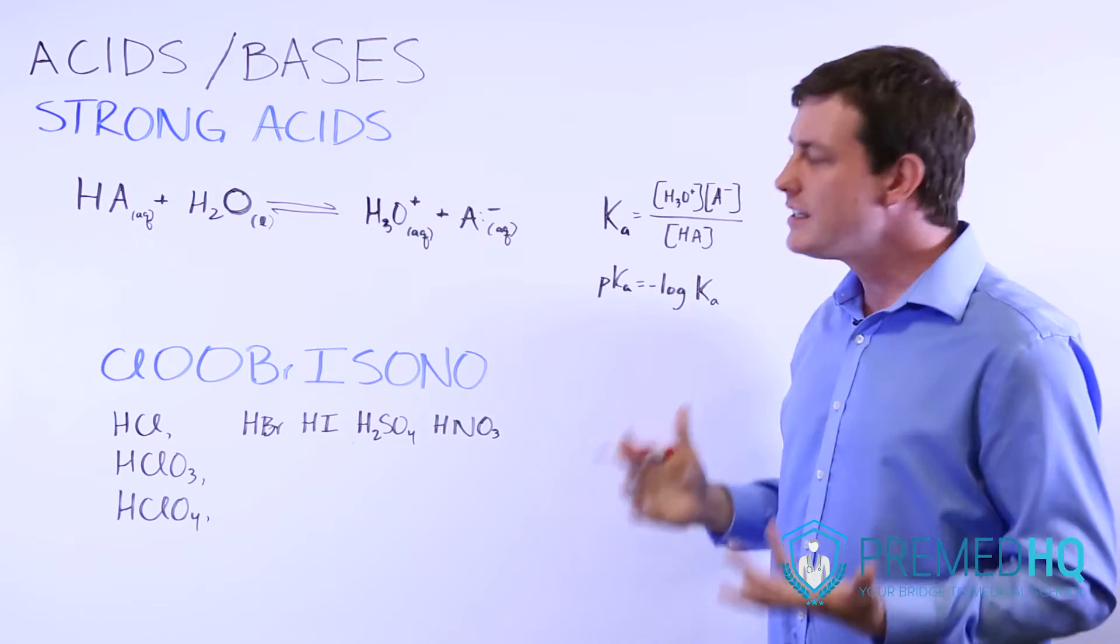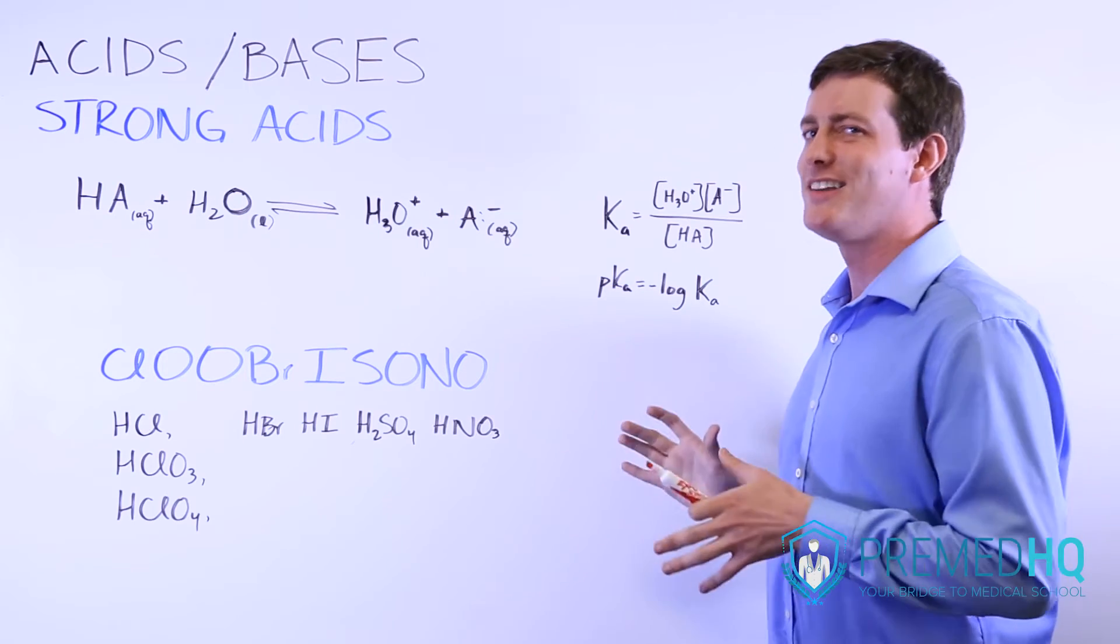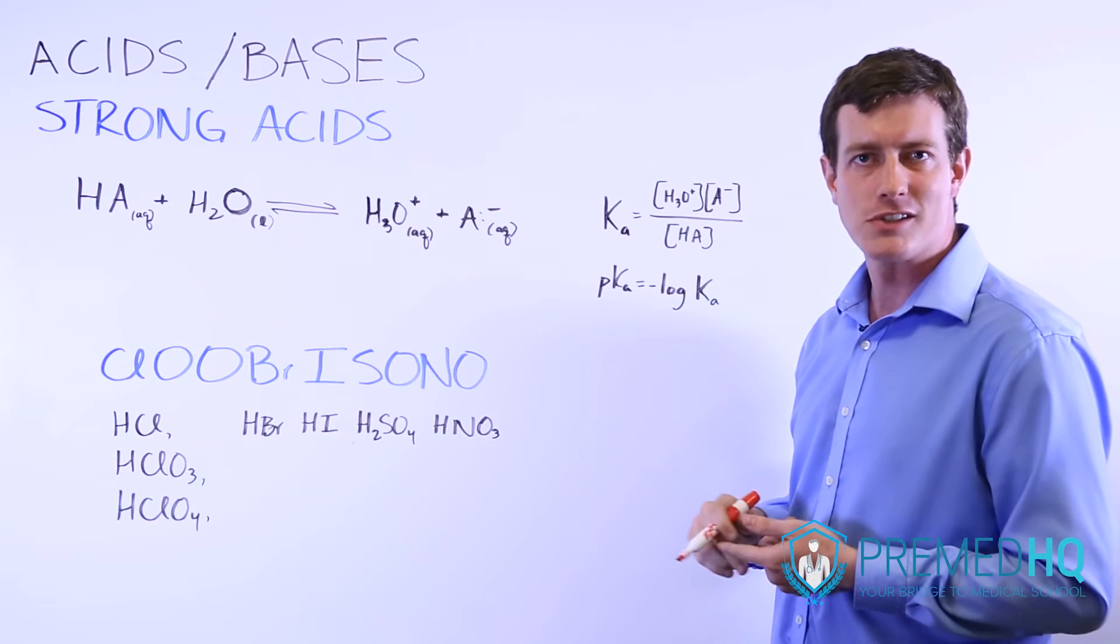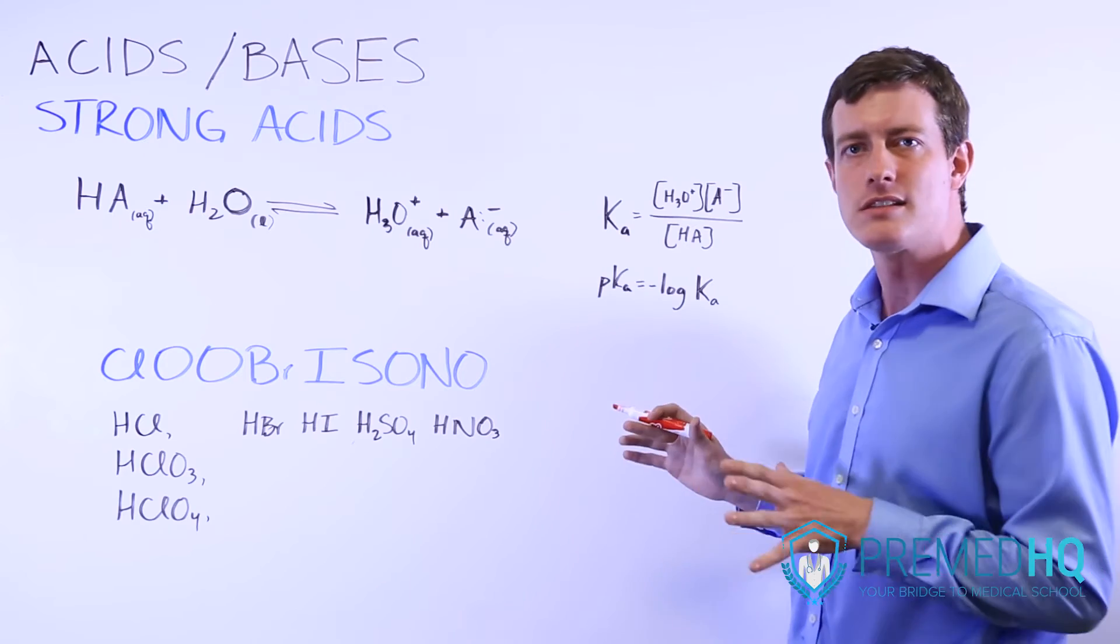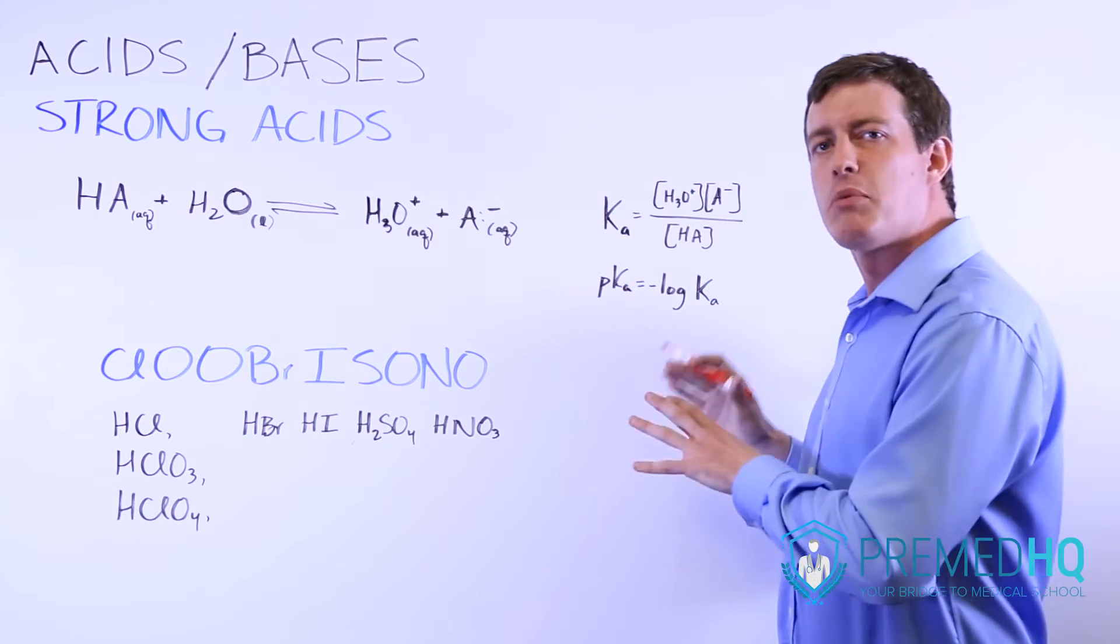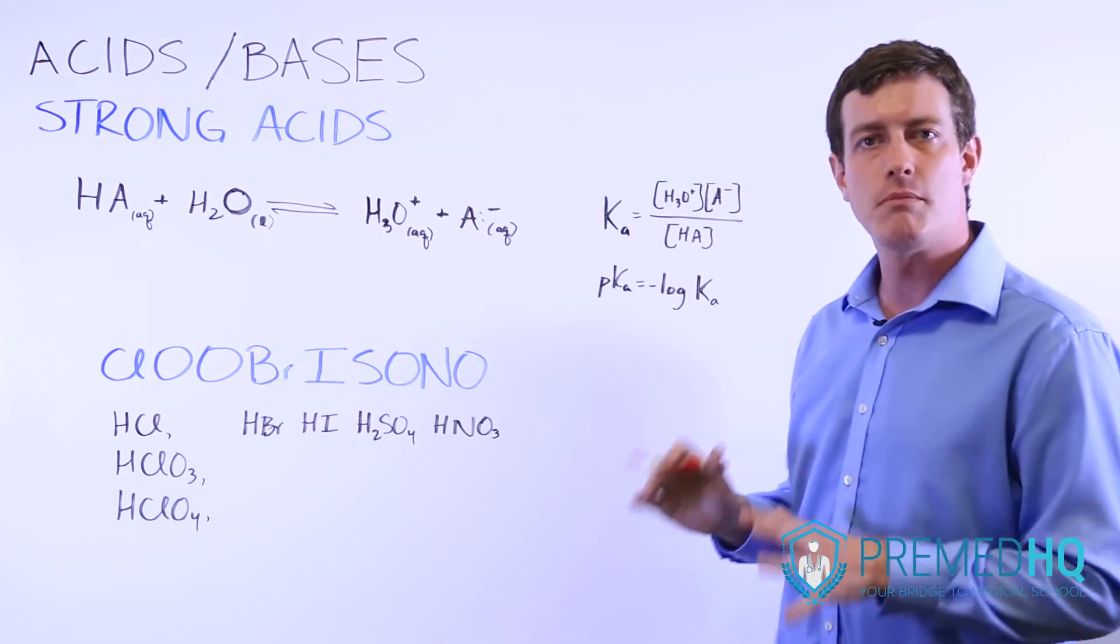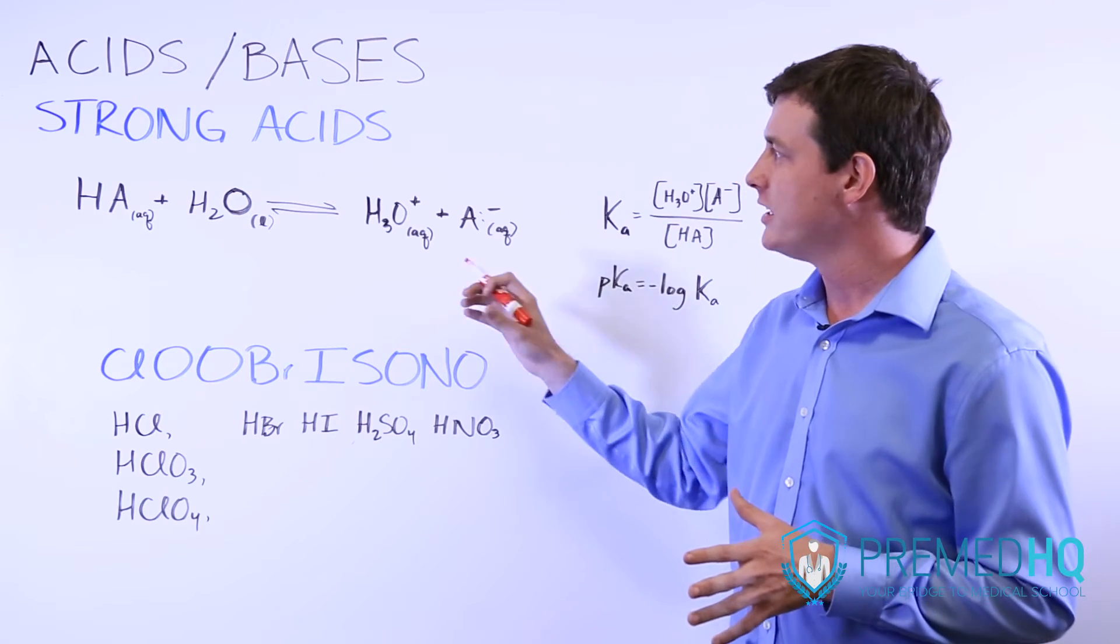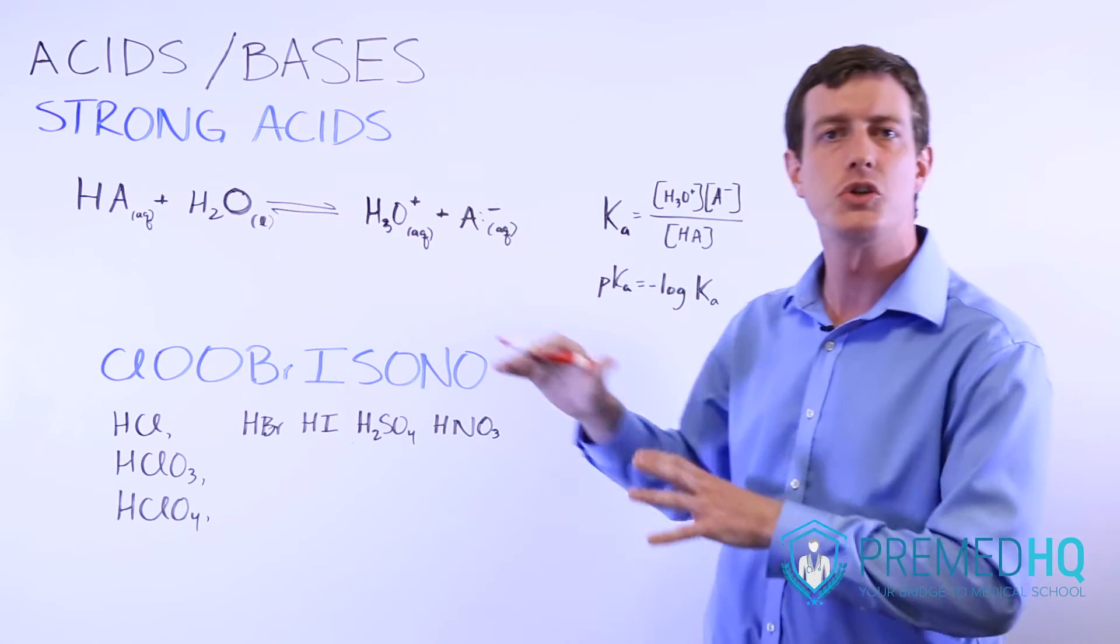Now there is a list of strong acids to be aware of, but for the MCAT there are a lot of lists to be aware of. There are strong nucleophiles, there are oxidizing and reducing agents, and there are many things to consider. So rather than just giving you a list to memorize, we've come up with a mnemonic, Clubrisono, which you can use to remember the list of all of the general chemistry acids that you can consider strong acids, and which you can assume dissociate completely.